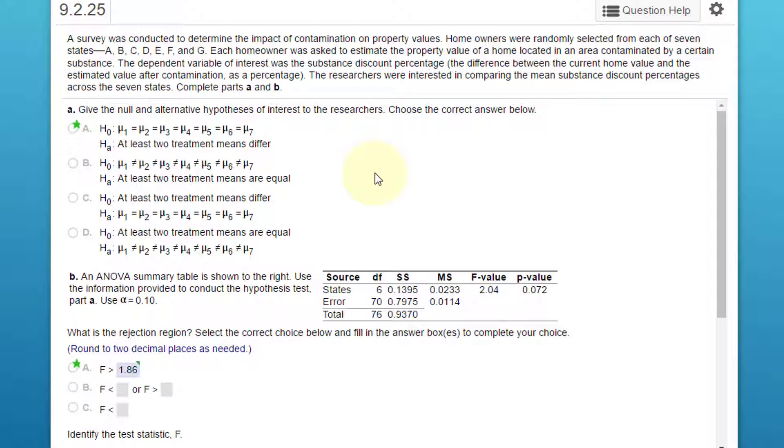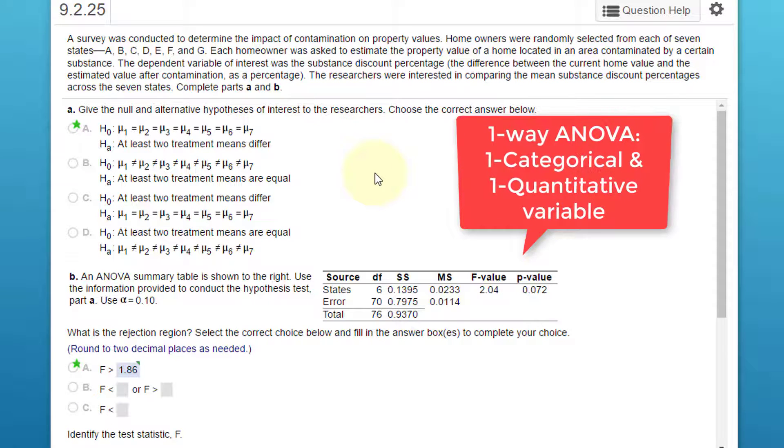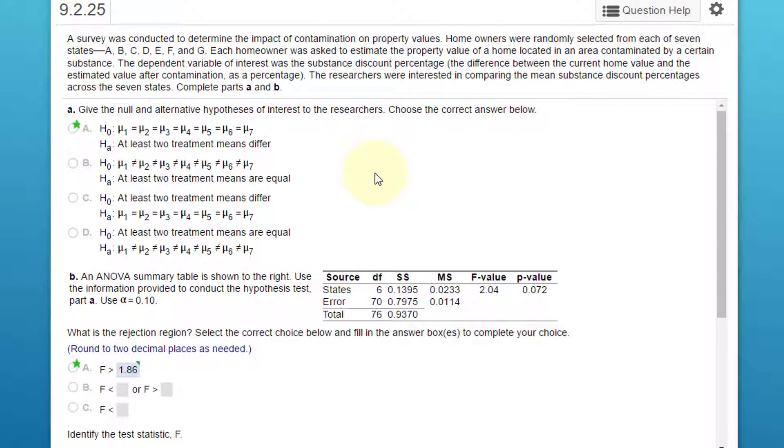In the problem, we're told that there were seven states, so that's a categorical variable. The quantitative variable we need is the property value. They're looking at the difference between the value of the property if it was not in a contaminated region versus if it is in the contaminated region. So we've got a single categorical variable with seven levels and one quantitative variable, which is what we need.